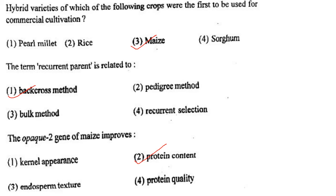Next one: Hybrid varieties of which of the following crops were the first to be used for commercial cultivation? Option 1, pearl millet; option 2, rice; option 3, maize; option 4, sorghum. Answer is option 3: maize.